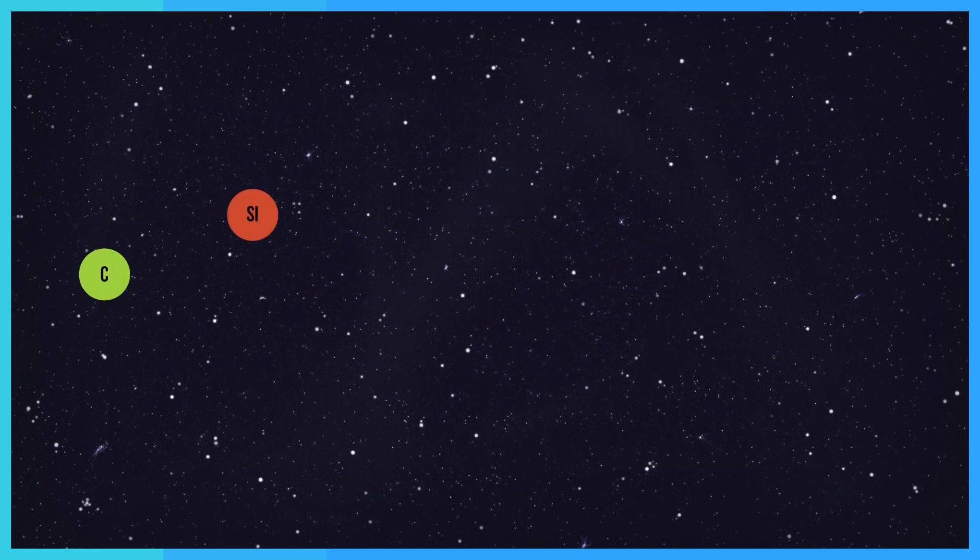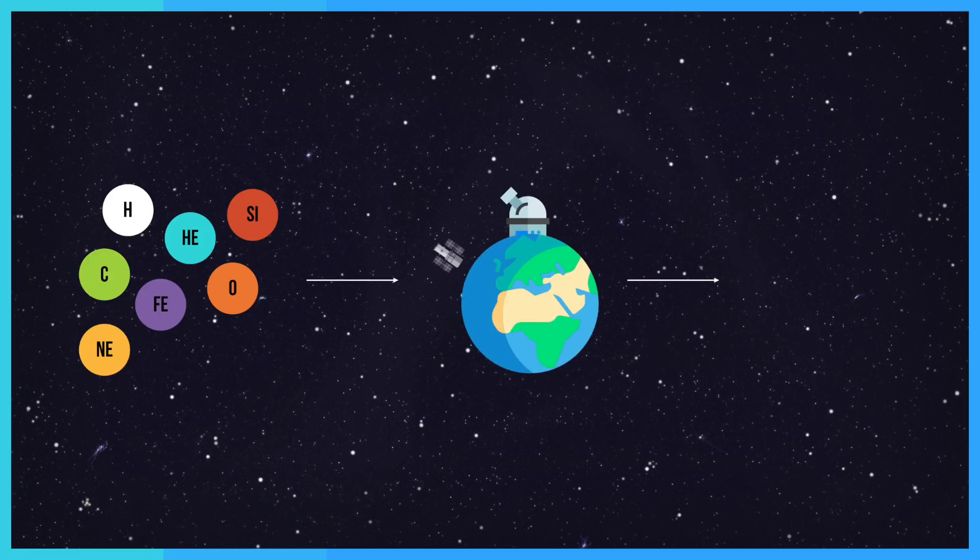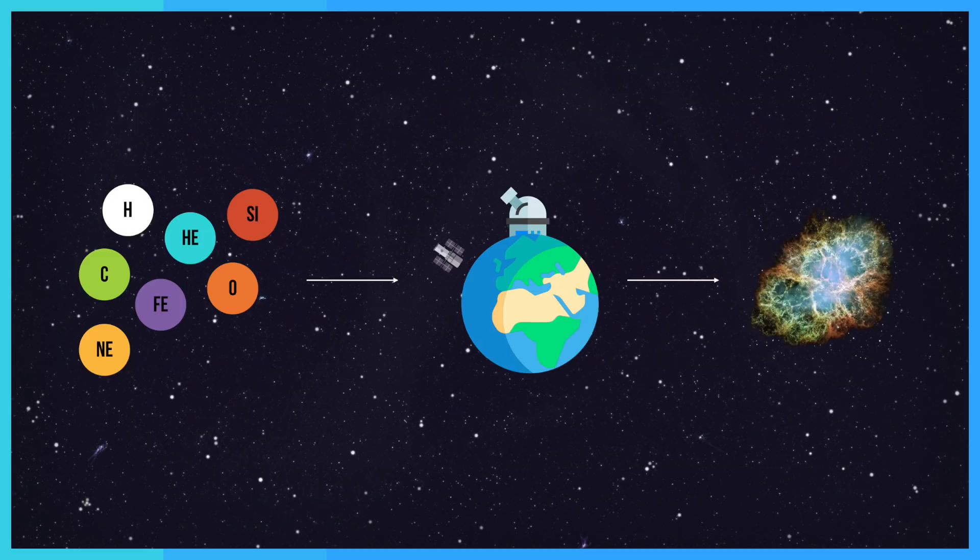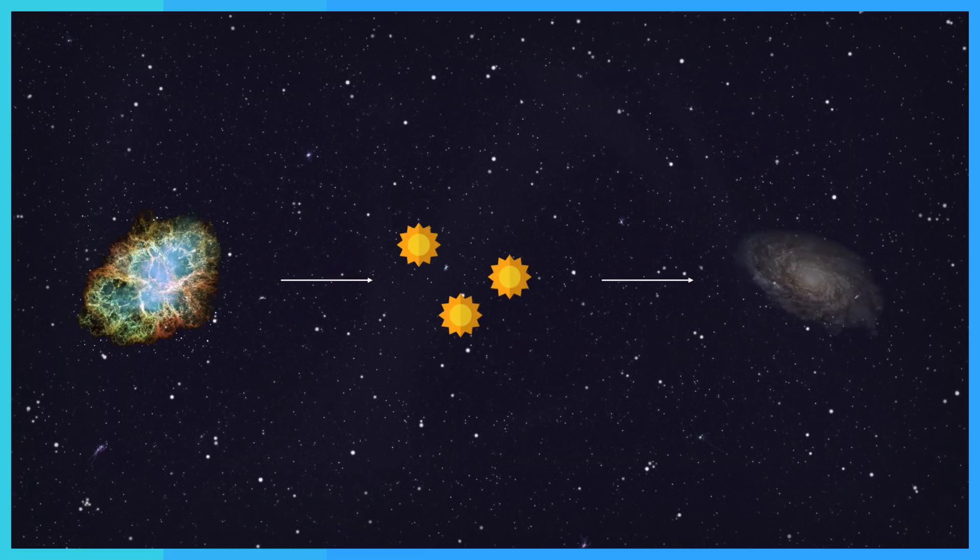It's also worth mentioning that all the heavier elements like carbon, oxygen and all the metals that make up the earth, the moon and all the living things on the planet can only form in the extreme pressure at the center of a supernova. This means that supernovas basically seed the next generation of stars and solar systems.